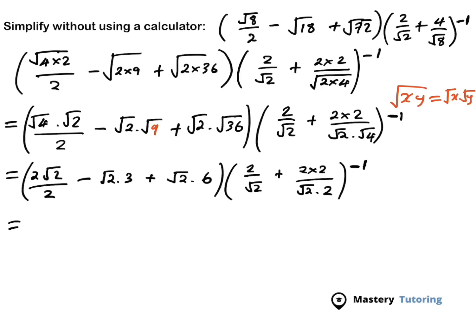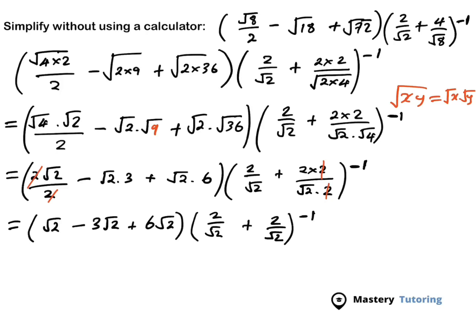Now let us cancel the terms that are cancelable. So this and that are going to cancel. And when they do, we're going to have square root of 2 here, minus 3 square root of 2. You can rearrange this — start with the 3 and then follow with the square root sign. Then plus 6 square root of 2. And on this side you're going to have 2 over square root of 2, and the 2s are going to cancel, so you'll be left with 2 over square root of 2 to the power of negative 1.